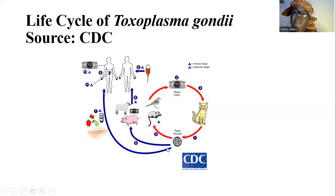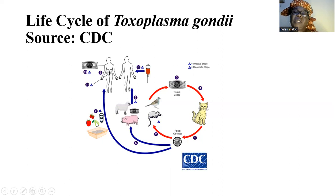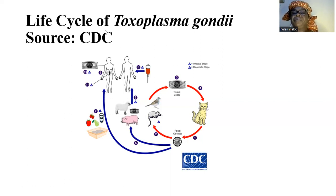The second way by which humans become infected is through contaminated water and contaminated raw vegetables, such as salad vegetables, cabbage, carrots, and tomatoes. By consuming these unwashed vegetables raw, humans become infected.